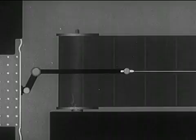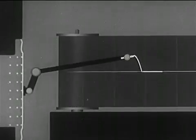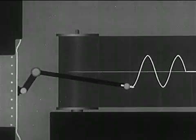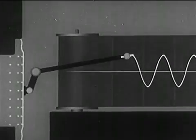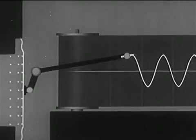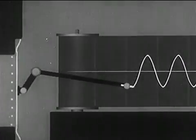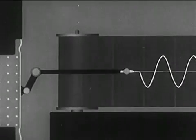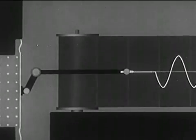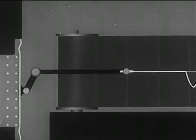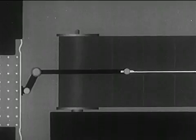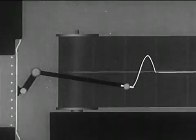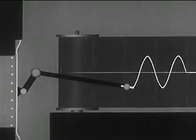We can record pressure variations in sound waves with this kind of instrument, an oscillograph. Sound waves are striking the diaphragm at the left. The stylus records the sound waves as a graph. Later, we shall use such graphs to represent sound waves. Condensations cause the stylus to move upward; rarefactions cause it to move downward.